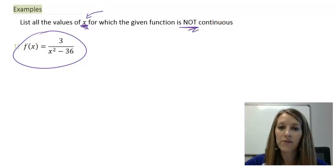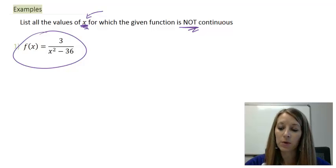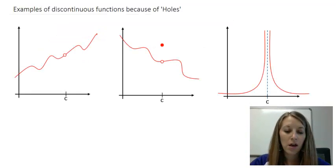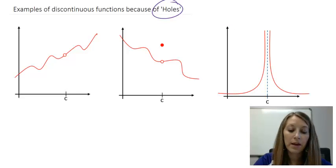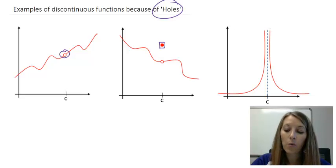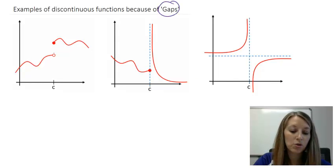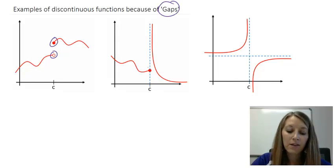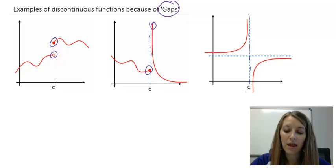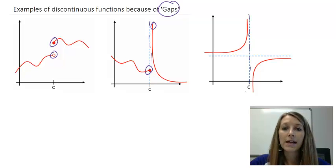Our job is to come up with the x values on our own. Let's review what causes graphs to not be continuous, visually first. There are holes in the graph — even though our points may be defined at a separate place — or when our graphs get infinitely close alongside a vertical asymptote, or because of gaps in our graph where we have two separate pieces that don't match up. So we need to ask ourselves: what causes these things to happen in the graph?